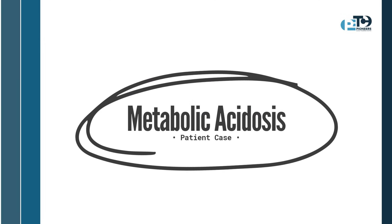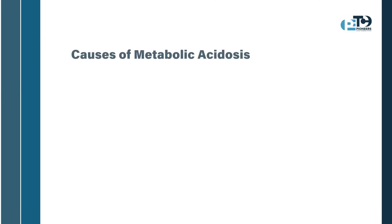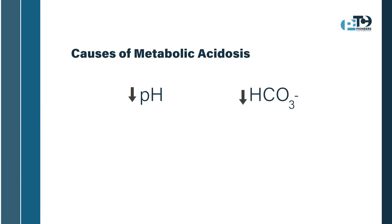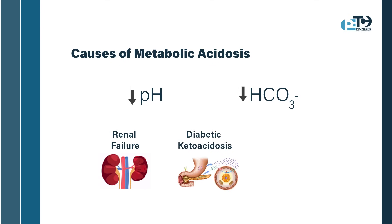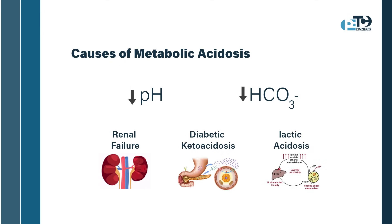If you said metabolic acidosis, you are absolutely correct. Metabolic acidosis is a decrease in blood pH due to reduced bicarbonate levels, often resulting from conditions like renal failure, diabetic ketoacidosis, or lactic acidosis. In metabolic acidosis, the body's buffering systems are overwhelmed, causing a drop in pH.